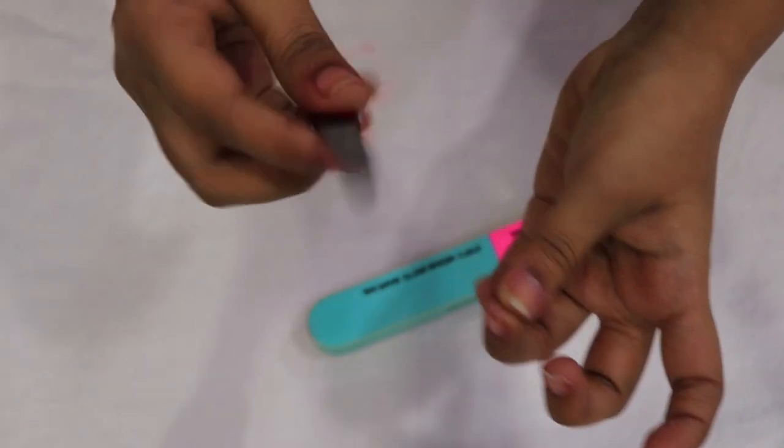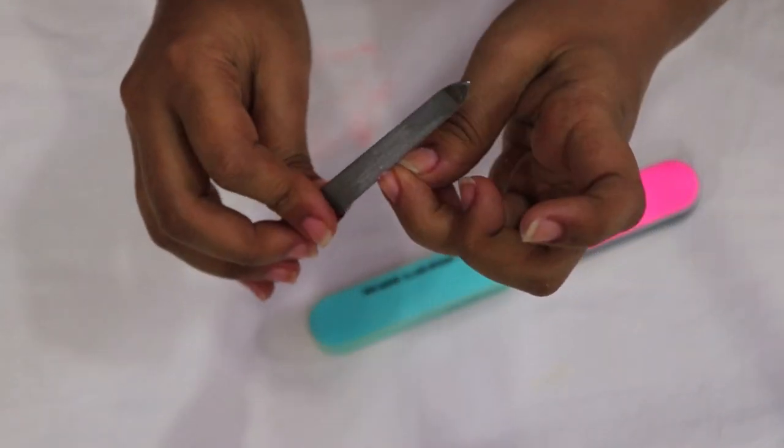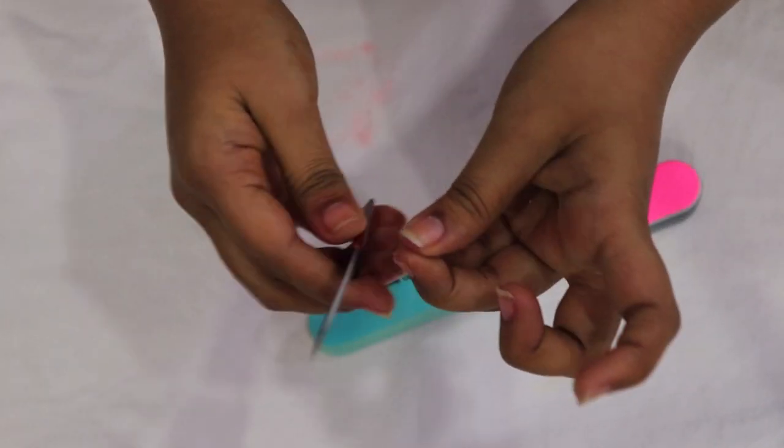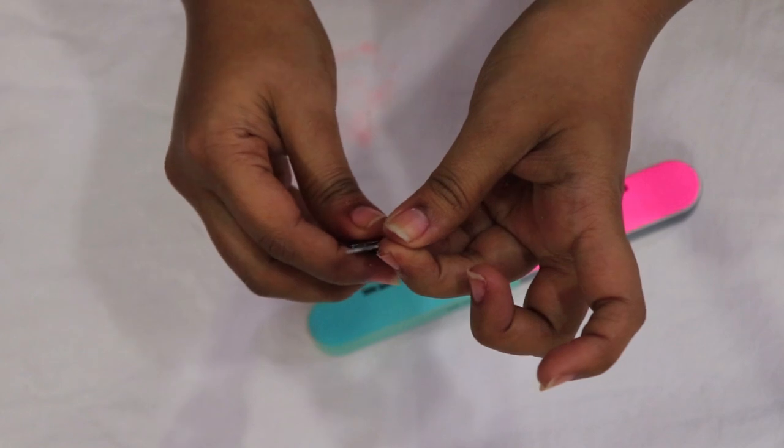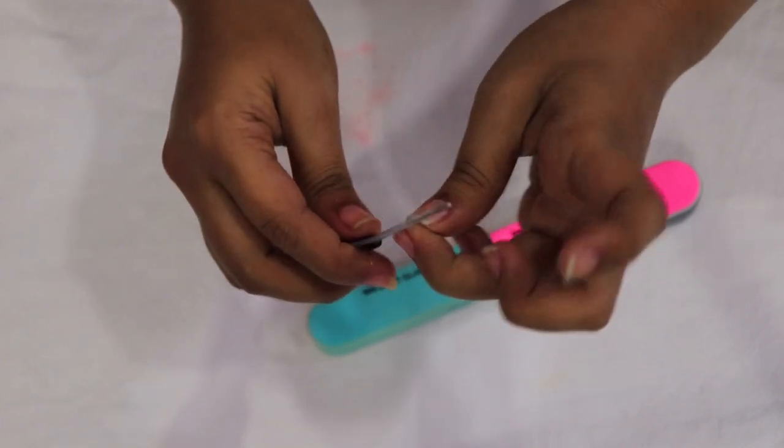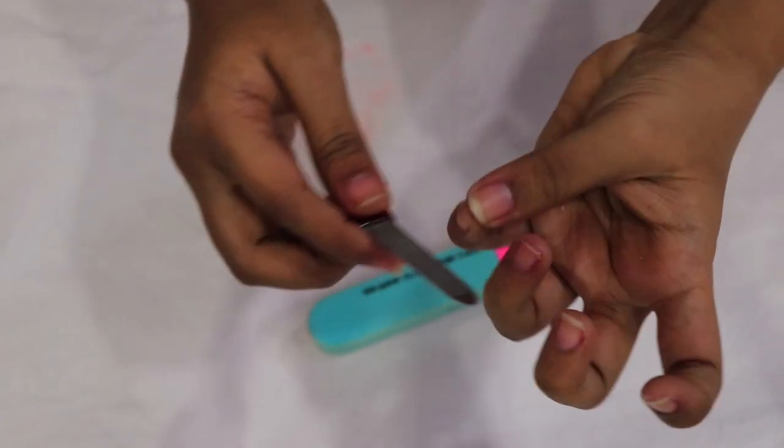You have to just take the shaper, keep it across the nails, and do it back and forth, so the shape will become amazing.